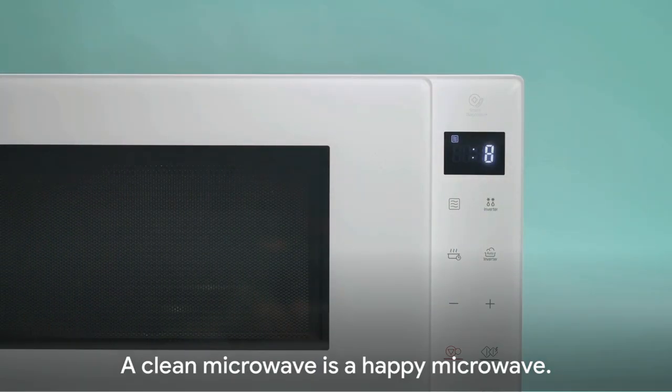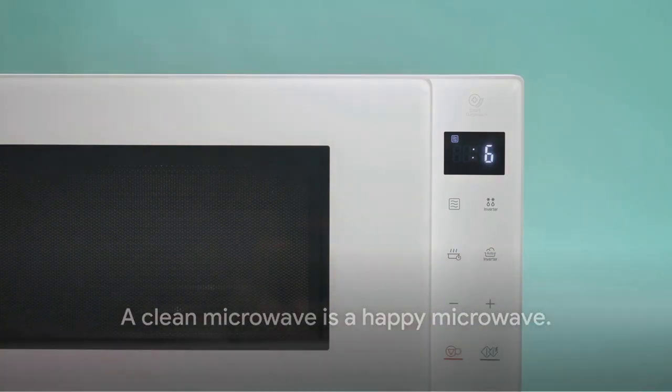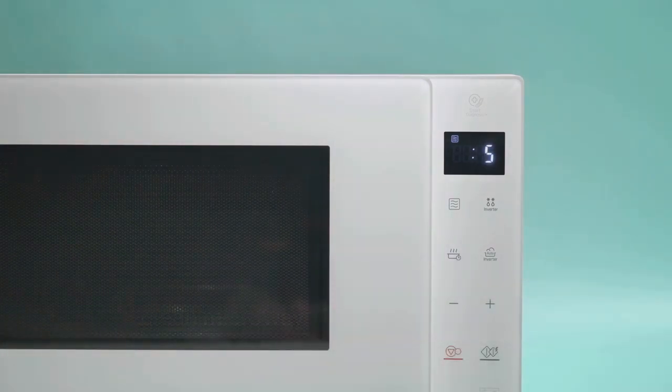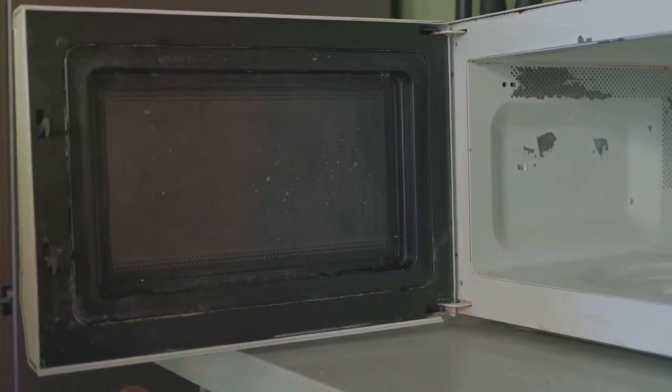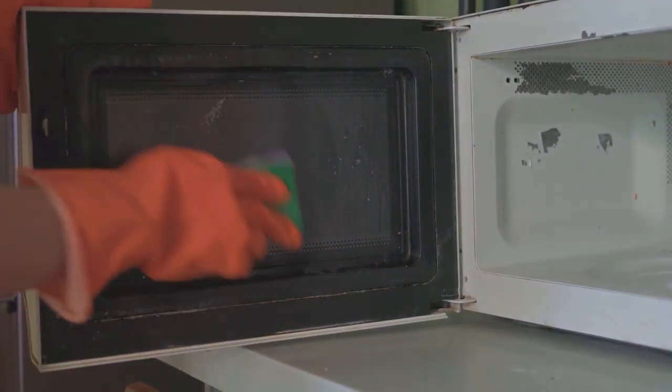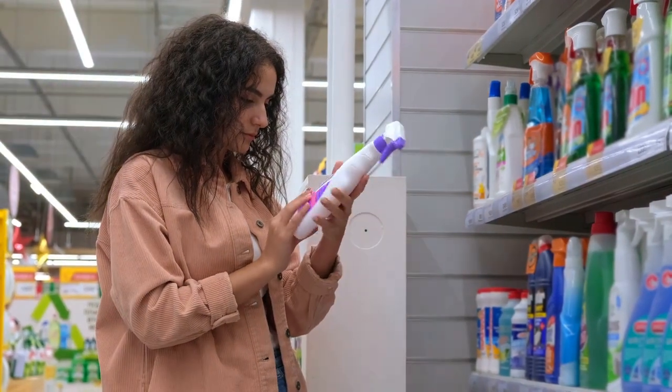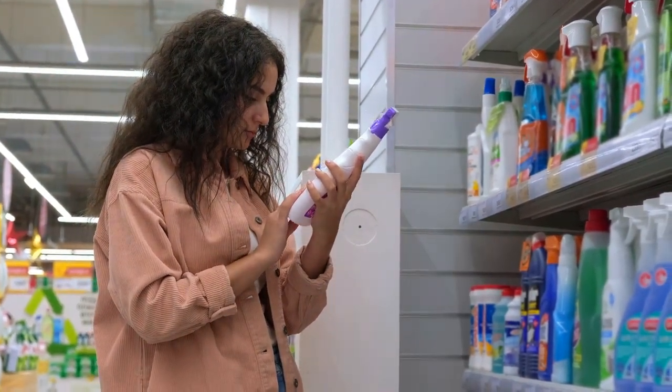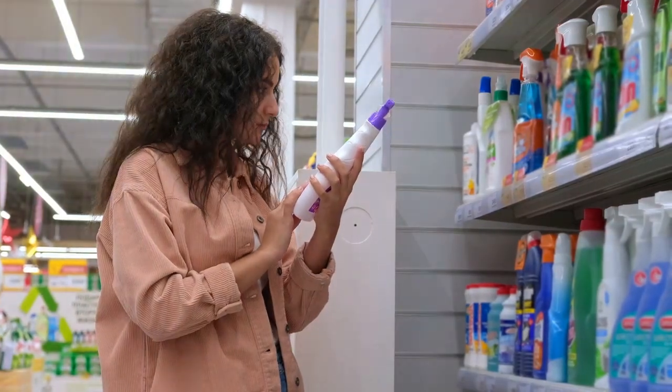Firstly, a clean microwave is a happy microwave. Make it a routine to wipe down the interior and exterior of your microwave with a damp cloth or sponge. Don't forget to clean the turntable and support ring as well. A simple mixture of vinegar and water can be your best friend in this task, helping you to remove any stubborn stains or odors.